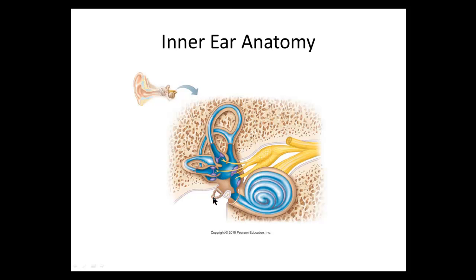There is a thin membrane underneath the stapes called the oval window. This membrane vibrates and pushes on the inner ear fluid when the stapes vibrates — triggered by the tympanic membrane vibrating as sound enters the ear canal. The nerves leaving the vestibule and cochlea combine to form the vestibulocochlear nerve.